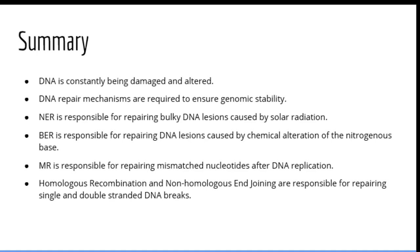In summary, DNA is constantly being damaged and altered, and DNA repair mechanisms are required to ensure genomic stability. NER repairs bulky DNA lesions from solar radiation such as thymine dimers and 4-6 photoproducts. BER repairs lesions from chemical alterations of nitrogenous bases — deamination, alkylation, oxidation, and conversion of thymine to uracil. Mismatch repair corrects mismatched nucleotides after DNA replication. Homologous recombination and non-homologous end-joining repair single and double-stranded DNA breaks, with homologous recombination being more accurate and non-homologous end-joining carrying a risk of structural chromosomal mutations. That concludes our lecture on DNA repair mechanisms.